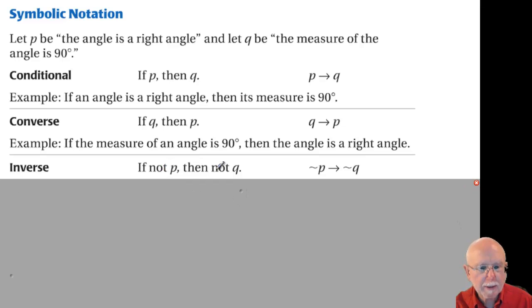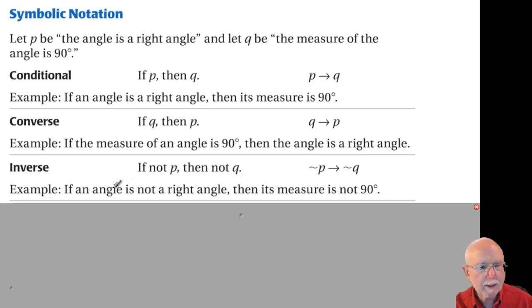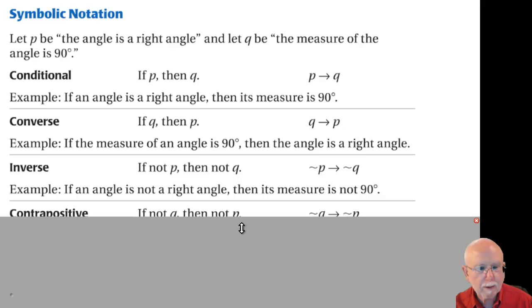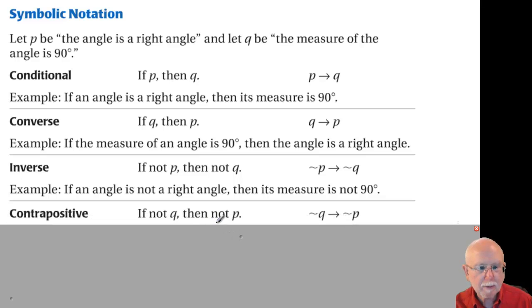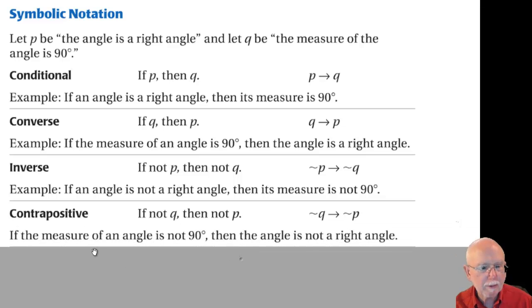For the inverse, I put a 'not' in — I negate it. So: if not P, then not Q, or 'not P implies not Q.' Putting it into words: if an angle is not a right angle, then its measure is not 90 degrees. For the contrapositive, I take both the converse — switch it — and the inverse — negate it. So I have: if not Q, then not P, or 'not Q implies not P.' Putting it into words: if the measure of an angle is not 90 degrees, then the angle is not a right angle.